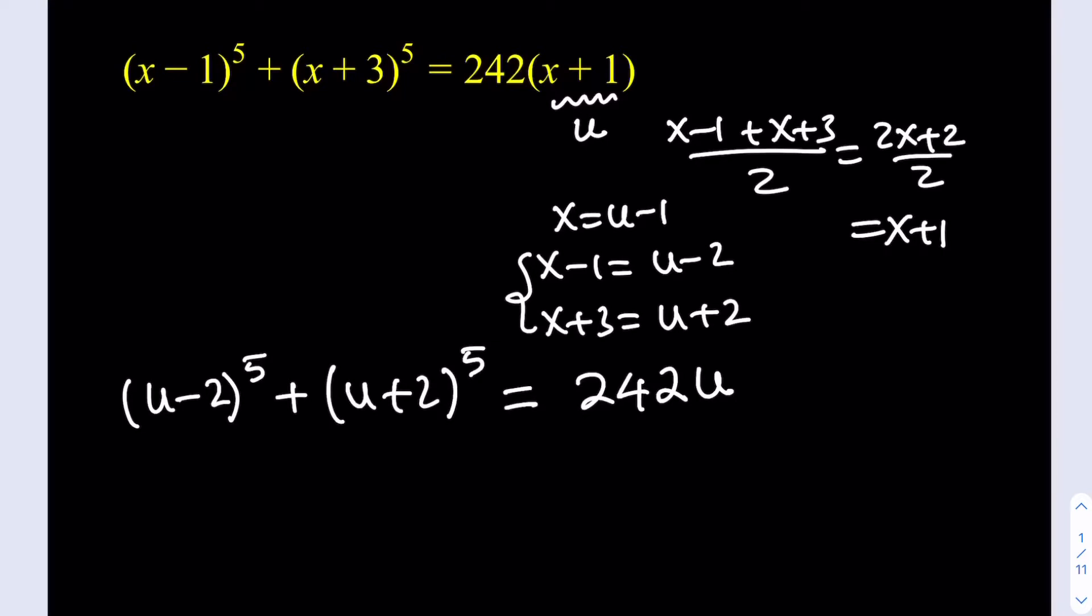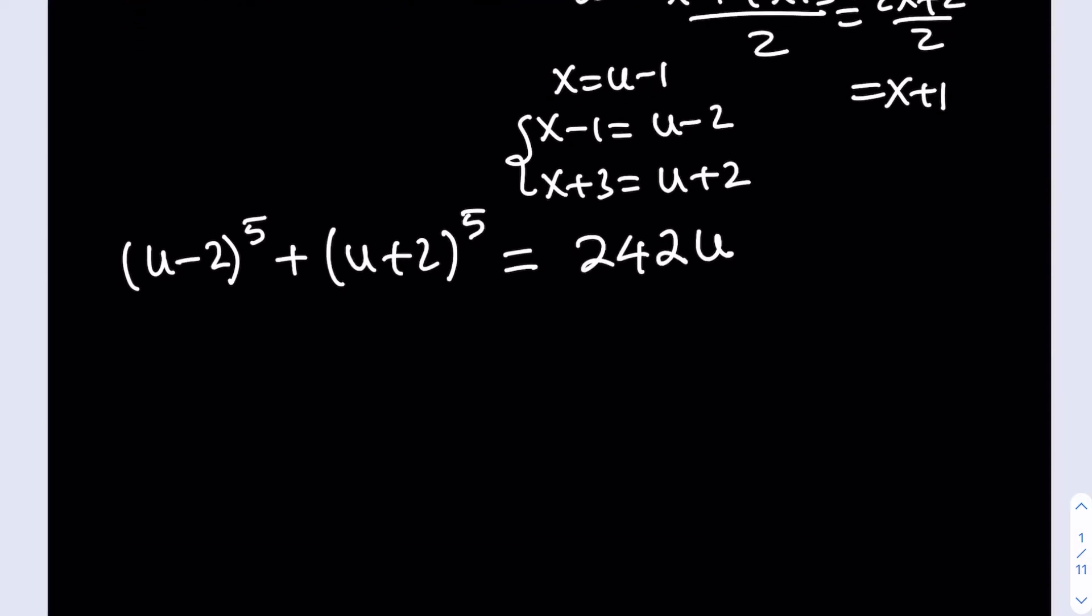So this is the type of symmetry that we've been looking for. That's why we were looking for the average, we were looking for the midpoint, and then we were able to get that on both sides of the equation. Notice that we have (u-2)^5 and (u+2)^5, which we can apply the binomial theorem to. But something nice is going to happen. Let's go ahead and do it and see what happens. If you use the Pascal's triangle, the 5th row with the coefficients of 1, 5, 10, 10, 5, 1, those are the coefficients that we're going to use for (a+b)^5.